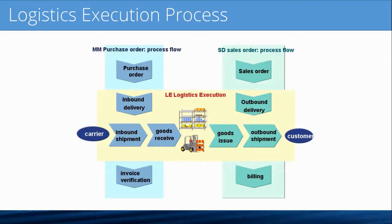Coming down the left side we have the invoice verification process, which closes the MM loop. On the right side we have outbound logistics: assuming all product is in the warehouse, a sales order comes in from a customer, which creates an outbound delivery. The warehouse team goes through the pick and pack process, posts goods issue on the outbound delivery, the shipment physically leaves the warehouse to the customer, and the SD process closes with billing documentation. This is a quick and friendly overview of the logistics execution process.